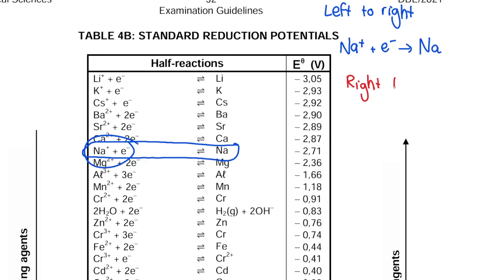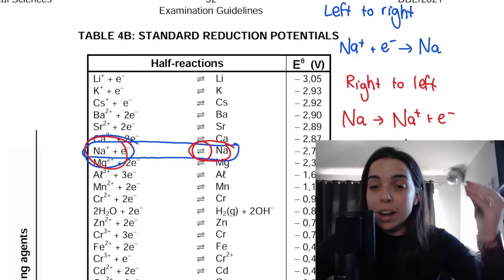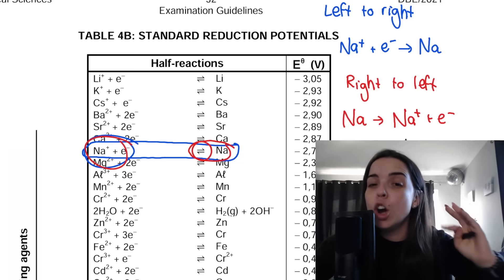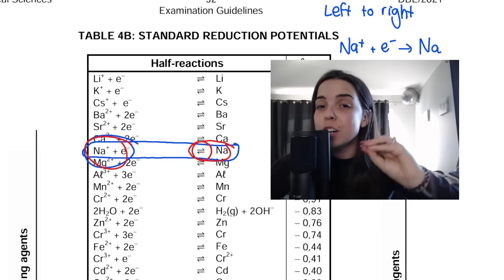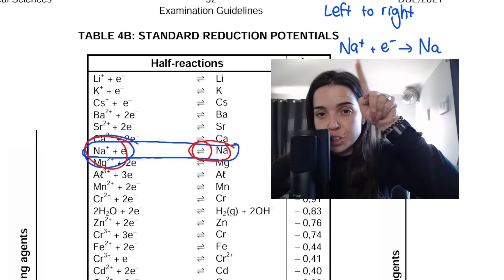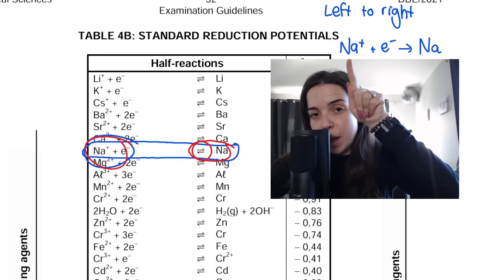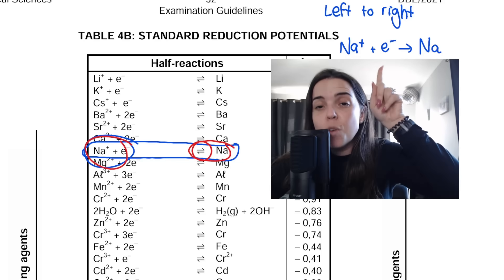Writing from right to left means we start with whatever is on the right-hand side — sodium — then put our arrow, then write Na+ plus e−. If you look at the two half reactions written above, one is written forwards and one is written backwards. One represents oxidation and the other represents reduction. The one in blue at the top represents reduction, because reduction is gain of electrons — remember OIL RIG, reduction is gain. This sodium ion Na+ is being reduced, gaining the electron to form sodium. Writing a reaction from left to right as it appears on the table means you are writing a reduction half reaction.